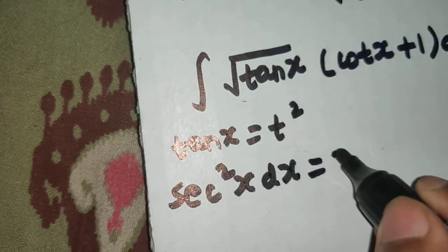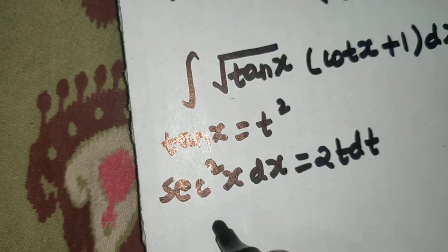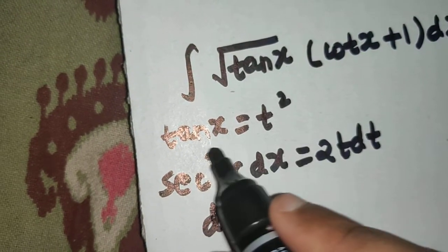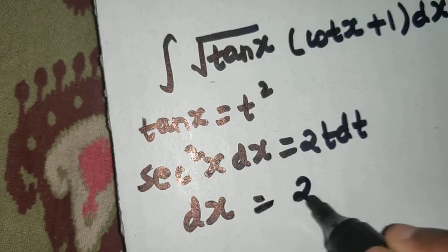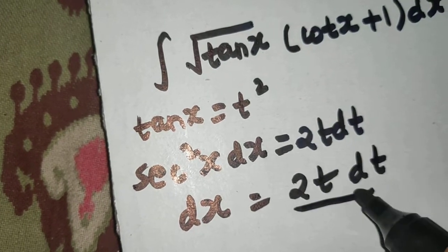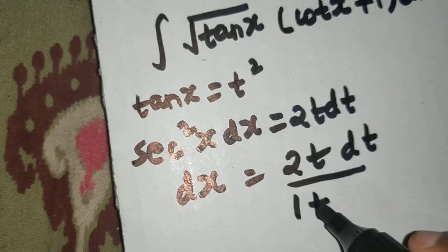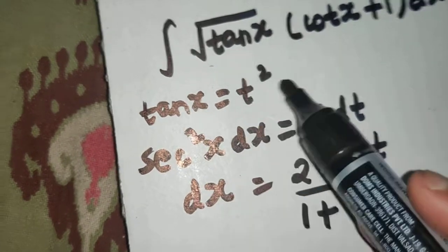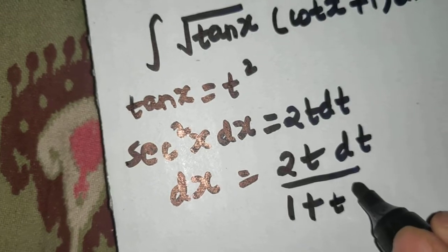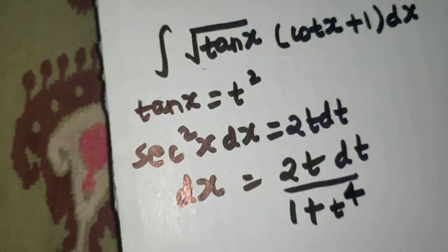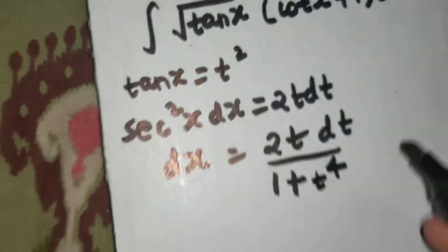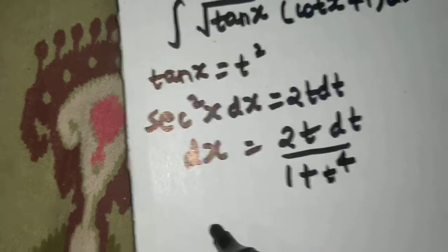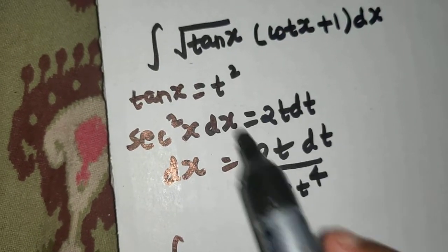So dx will be equal to 2t dt. Now I want everything in terms of t, so dx equals 2t dt divided by sec²x, which is 1 + tan²x. But tan x is t², so sec²x = 1 + t⁴.